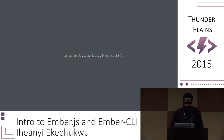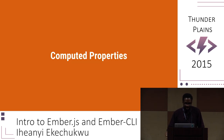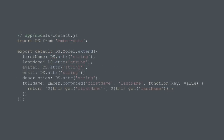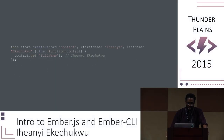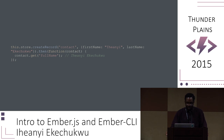Sometimes you need computed properties — properties that are dependent on other properties of your object. Here we have a computed property, fullName, computed off of the firstName and lastName properties. You can use this computed property in your Ember application just like any other property. The cool thing is, if I were to change my firstName property to my full first name, Ihaichuku, then the fullName property would change to Ihaichuku Ekachuku automatically.